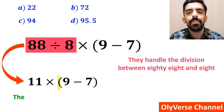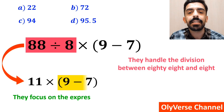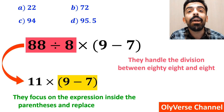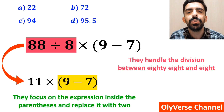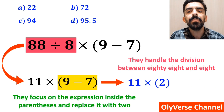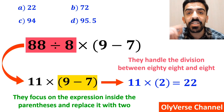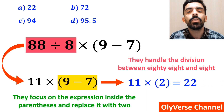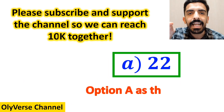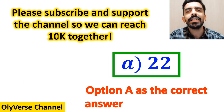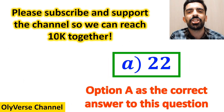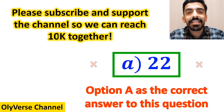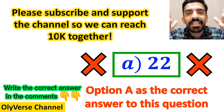In the final step, they focus on the expression inside the parenthesis and replace it with 2. So this expression becomes 11 multiplied by 2, which finally gives them the answer 22. They then quickly look at the options and choose option A as the correct answer. However, that's definitely wrong!